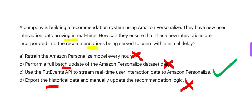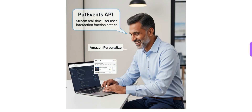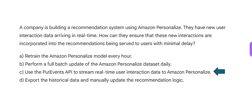The correct answer: use the Put Events API. Using this API you bring real-time user interaction data to Amazon Personalize. Once the data comes in, the service automatically uses it to update the recommendations dynamically. With minimum data, it will automatically update — you just bring the data and it updates. Your Put Events API streams real-time data to Amazon Personalize, and Personalize automatically updates its recommendations. This is the perfect solution — Option C.